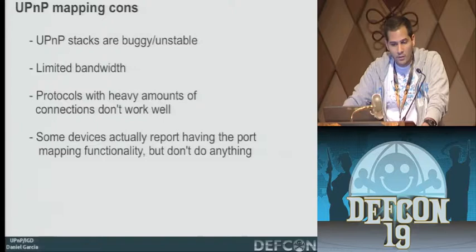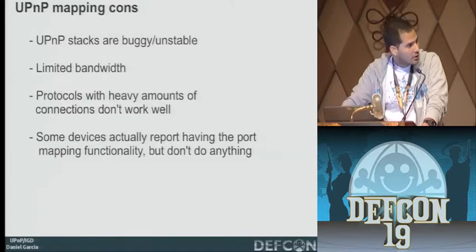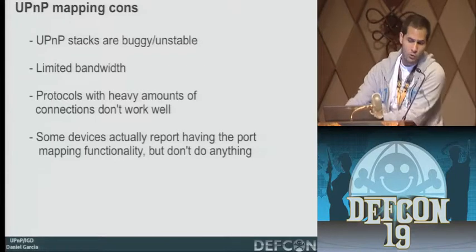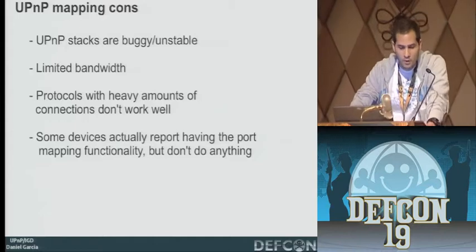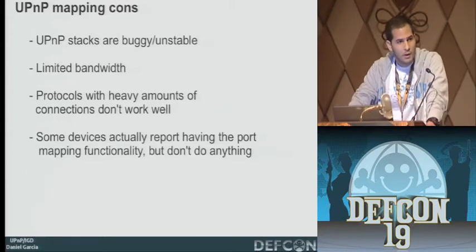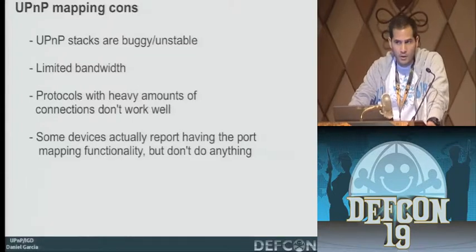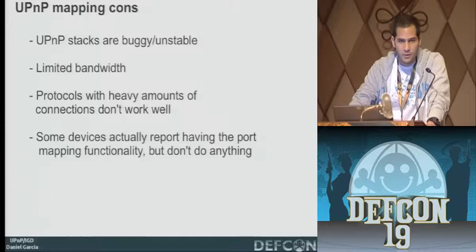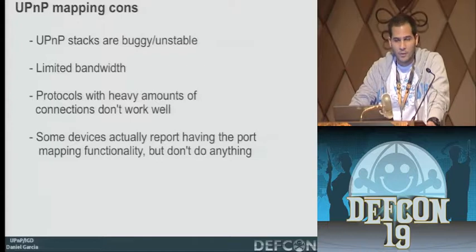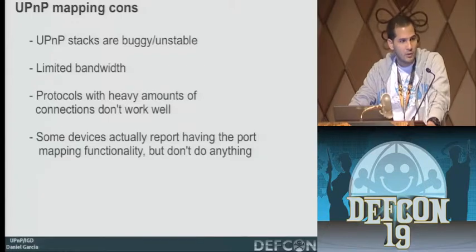We also have limited bandwidth because we're relying on the upload bandwidth of the devices. We also have problems with protocols that have a heavy amount of connections. We can use UPnP mapping for SSH or some web requests, but for something like torrents, it won't work well — if we have a limit of 150 or 200 mappings at a time, it's just not going to work.